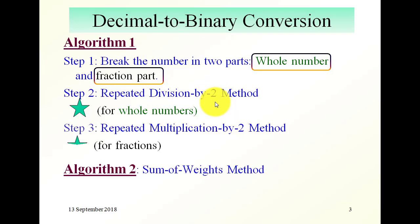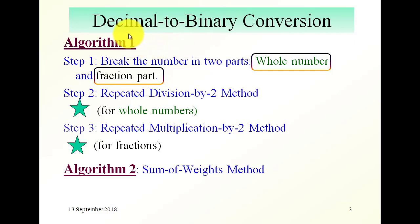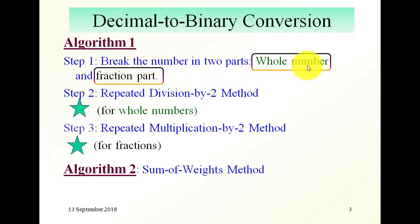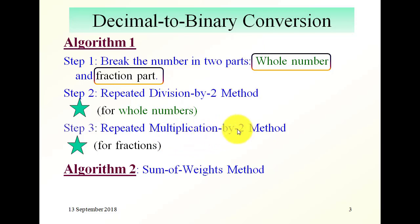For the fractional part, we do repeated multiplication by 2. As a matter of fact, converting decimal to base R will follow the same thing. We convert by breaking the number into two parts — the whole part and the fractional part. For the whole part we divide by the new R, and for the fractional part we multiply by the new R.